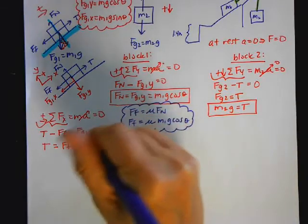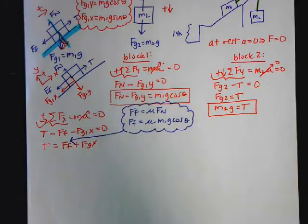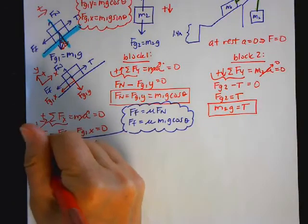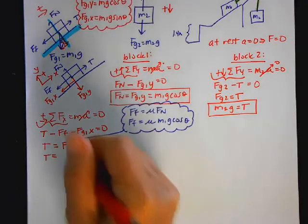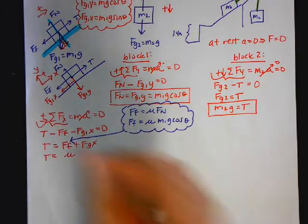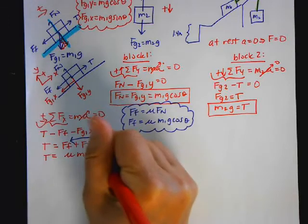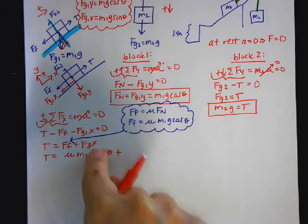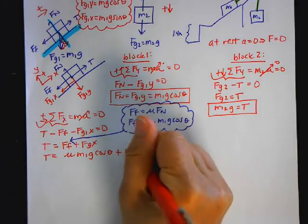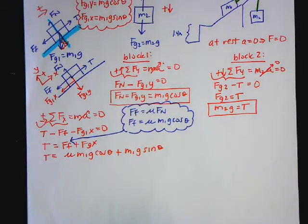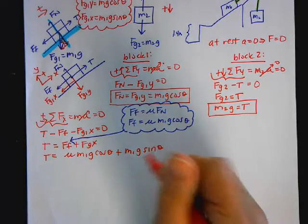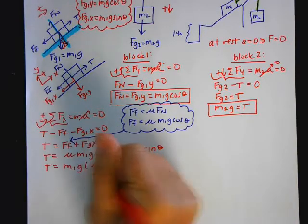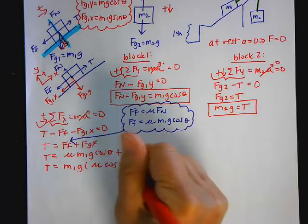So now the tension is M1G cosine of theta plus FGX, which is M1G sine of theta. So I can pull out M1G, so that's going to be M1G times mu cosine theta plus sine of theta.